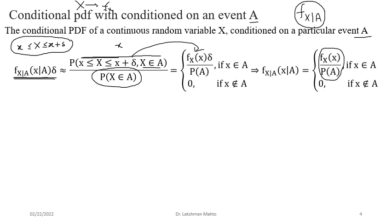Through the definition of density and conditional probability, we arrive at the explicit form of conditional density as a ratio of marginal density of X and probability of A when X is from A. When X is not from A, joint density is zero, so conditional density is also zero. Our new universe is A — conditional density is zero outside A.